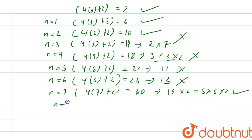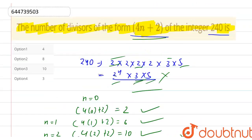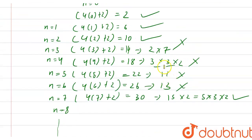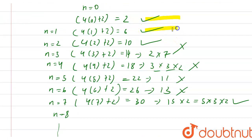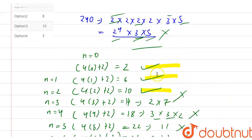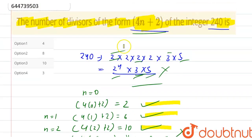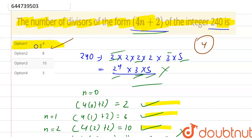After n equal to 7, up to any further value of n, no additional factors will be in the form 4n plus 2. So we are getting a total of 4 solutions: 2, 6, 10, and 30. The total number of divisors of 240 in the form 4n plus 2 is 4. So option 1 is the correct answer. Thank you so much everyone.